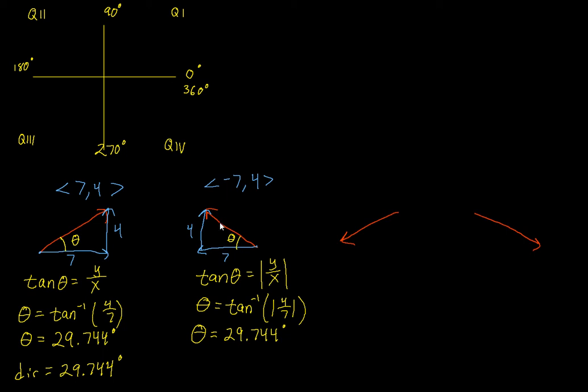But how is that possible? Because this vector's pointing towards the second quadrant. If we're looking at this angle, we're going from the positive x-axis to here. This is our direction. And this is way bigger than 29.744 degrees. The reason is because we actually calculated the reference angle. If you look on our triangle over here, we calculated this angle. That's the angle we discovered, which is our reference angle. Reference angle is always that positive angle to the nearest horizontal.